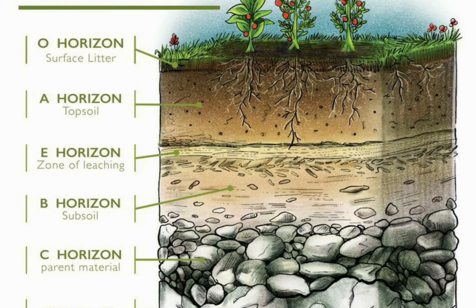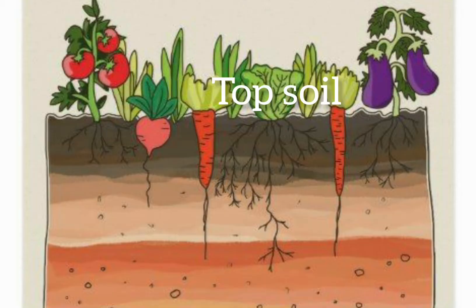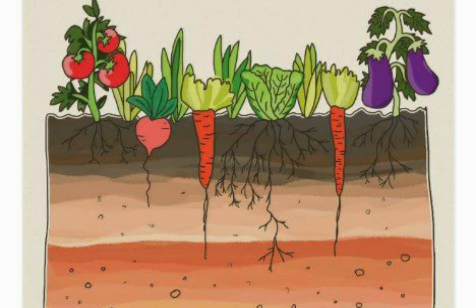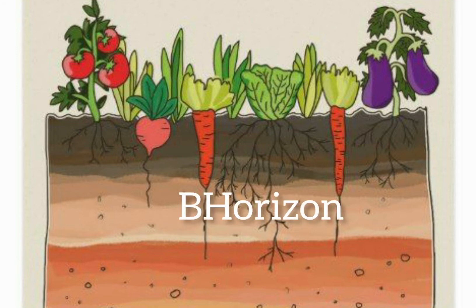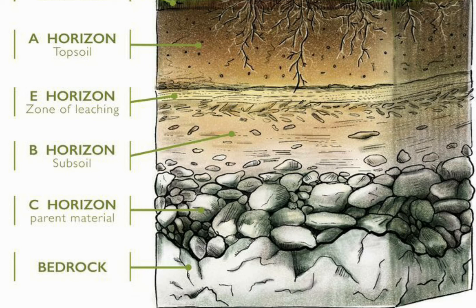The three main layers of the soil are: the topsoil, also known as the A horizon; the subsoil, the B horizon; the parent rock, or the C horizon; and finally the bedrock.